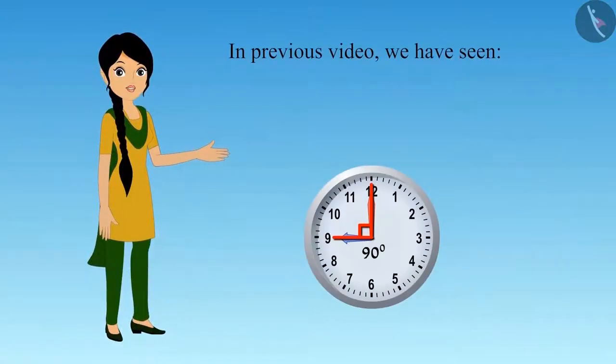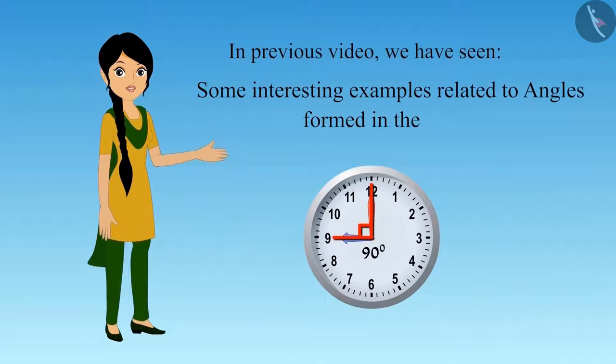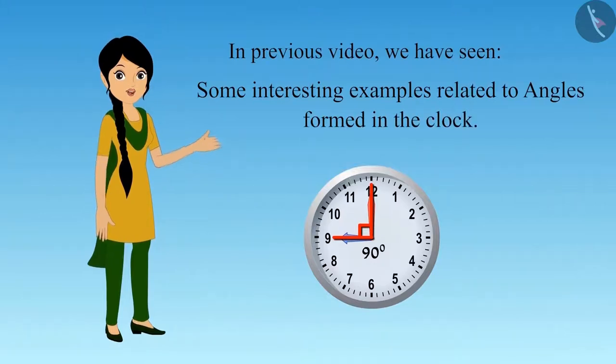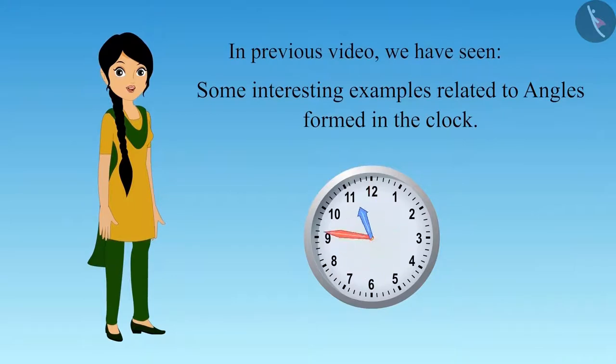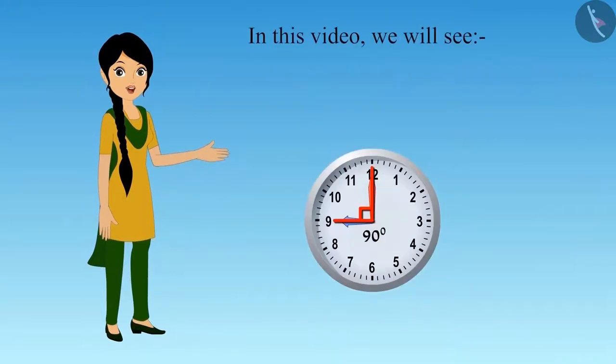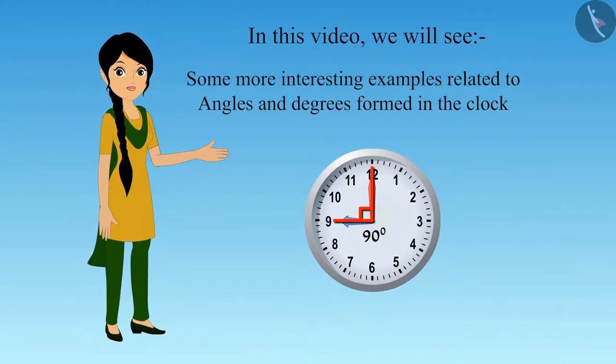Hello friends! In the previous video, we have seen how the angles of 90 and 0 degrees are formed in the clock with the help of some interesting examples. In this video, we will see some more interesting examples related to the angles and degrees formed in the clock.